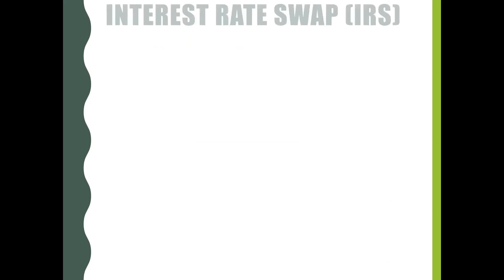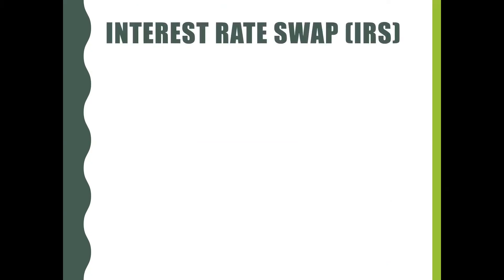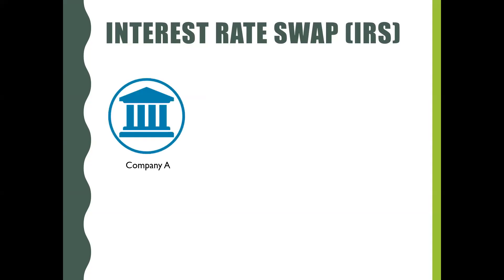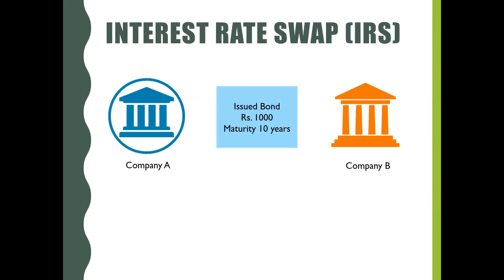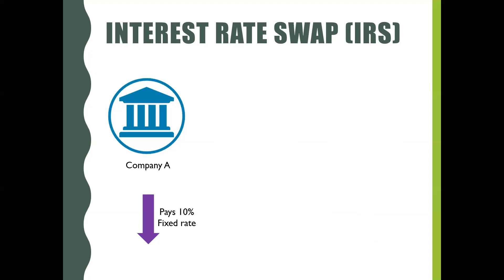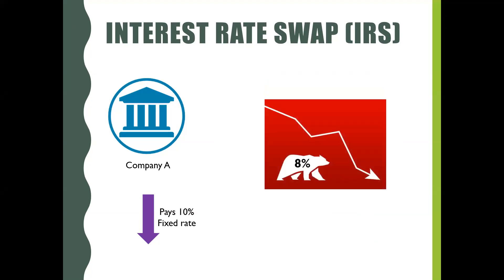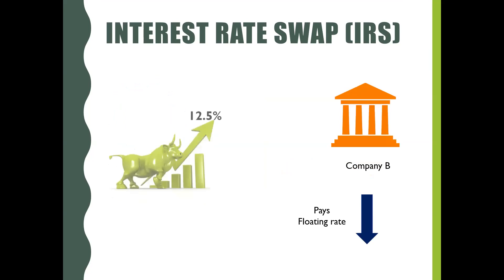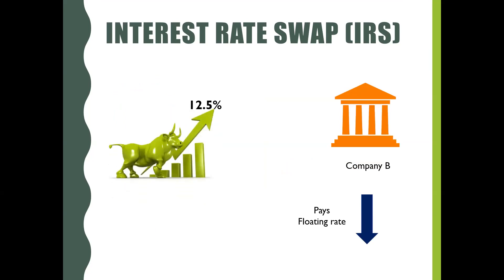Let's begin with interest rate swap. Assume there are two companies, company A and company B, and they have issued bonds worth 1,000 rupees each with a maturity of 10 years. Company A pays a 10% fixed coupon rate annually and company B pays a floating rate. If the market interest rate reduces to 8%, company A will end up paying 2% higher interest to its bondholders. On the other hand, if the interest rate rises to 12.5%, company B will end up paying a higher interest of 2.5% to its bondholders.